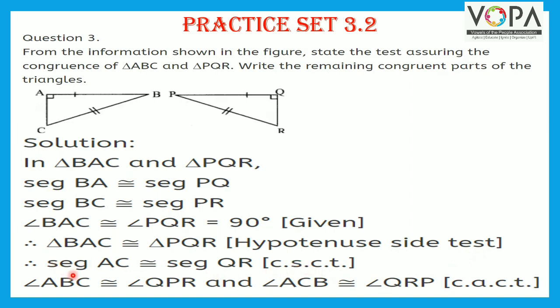The remaining side of the congruent triangle is segment AC congruent to segment QR — corresponding side of congruent triangles. The remaining angles of congruent triangles are: angle ABC congruent to angle QPR, and angle ACB congruent to angle QRP — corresponding angles of congruent triangles.